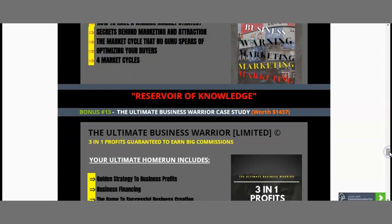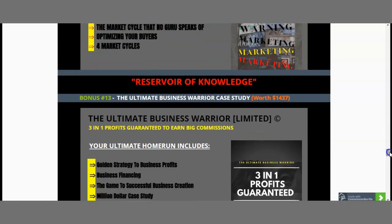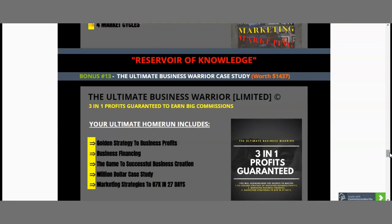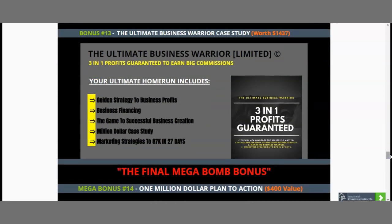The next bonus is worth $1,437. This is the ultimate business warrior case study — a 3-in-1 profits guaranteed package to earn you big commissions. Your ultimate home run includes the golden strategy to business profits, business financing, the game of successful business creation, a million dollar case study, and marketing strategies to $87,000 in 27 days. This is a one-time bonus, only one in existence, and it will help you understand how to manage your business profits and finances.